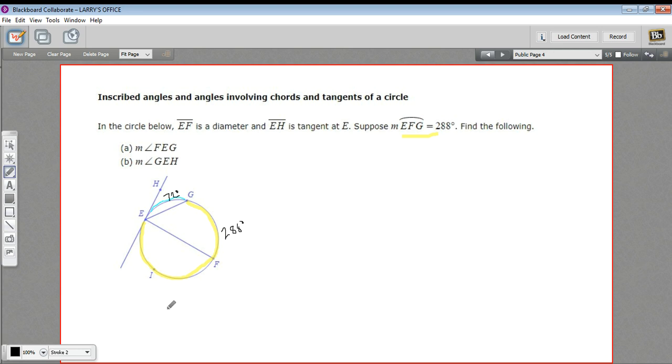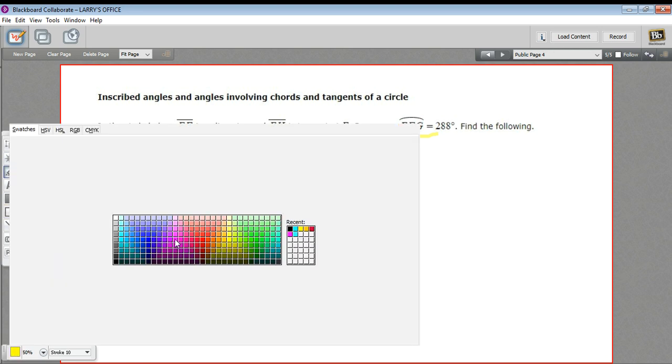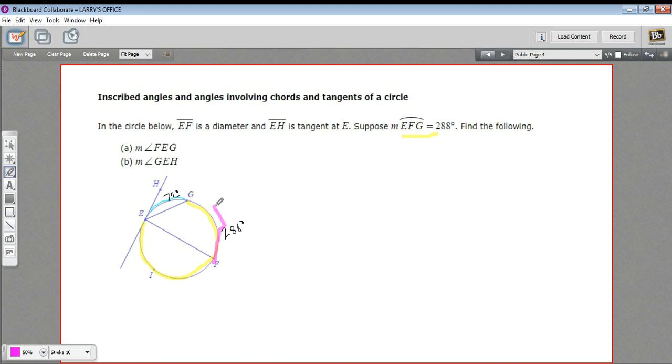And we're also told that EF is a diameter. So we know that this distance right here, let's choose a different color. This is 180 degrees. Okay.